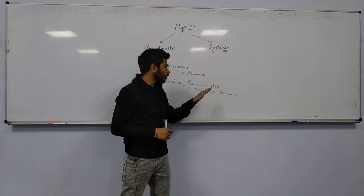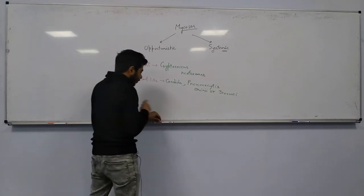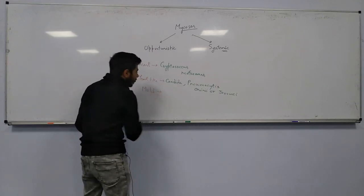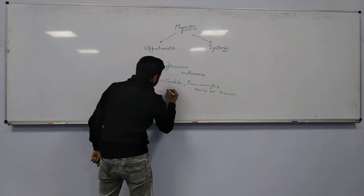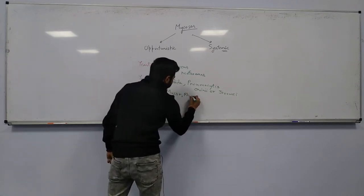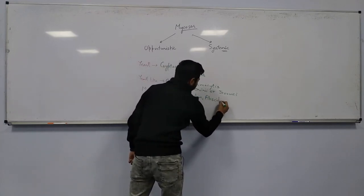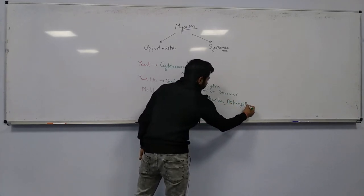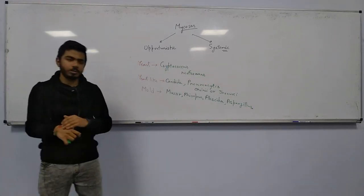Candida albicans, Pneumocystis carinii or jirovecii — those are the yeast-like fungi. After that we have mold. Under mold we generally talk about Mucor, Rhizopus, Absidia, and Aspergillus. This is the basic classification for the opportunistic mycoses.